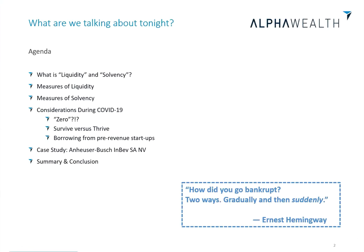Touching on the agenda: we need to unpack what liquidity and what solvency actually is. It's great to know definitions and anecdotal views, but you also need to be able to measure it. In terms of liquidity and solvency, I hit up three ratios each. In reality there are a lot more ratios, but I picked three. Then let's consider some of the complexities that COVID-19 has thrown our way and how we can potentially deal with them.